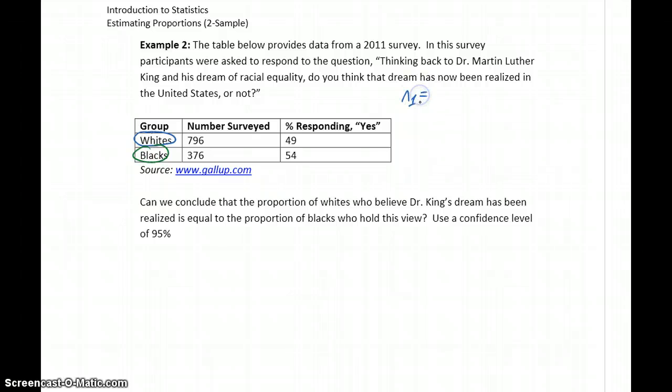Our sample size for the first sample is 796. Our first sample proportion is 0.49, which means N1 times P1 hat will be approximately 390, and N1 times 1 minus P1 hat will be approximately 406.